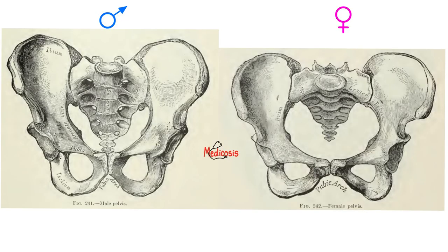Do we have bones in the body where we can tell the difference between males and females? Yes — many. The easiest is the hip bone; there are more than 15 differences between the male and female pelvis. These differences and more have been tabulated for decades in forensic pathology textbooks — one of the coolest books you will ever read.